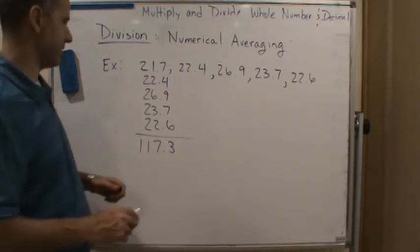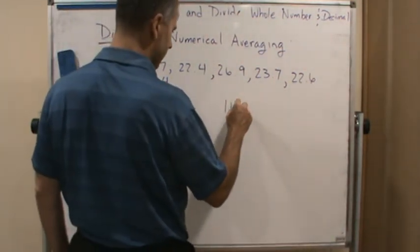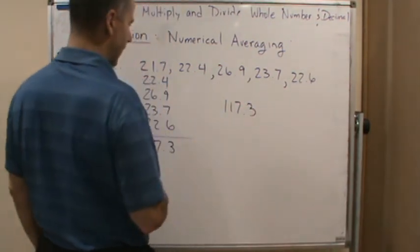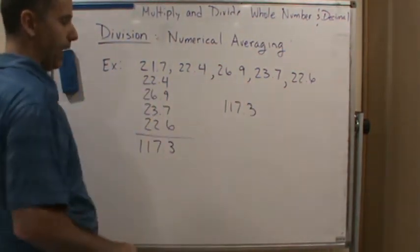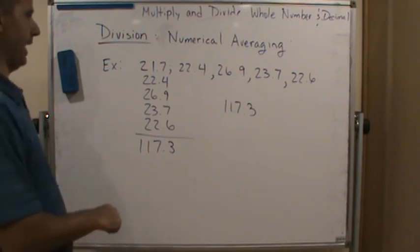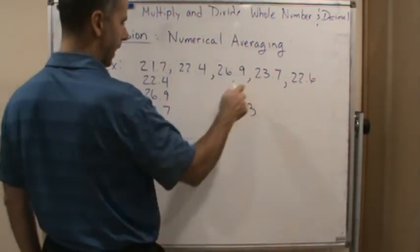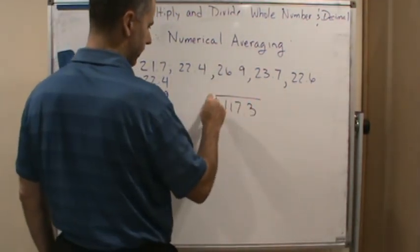So now that's the sum. Now what I'm going to do is I'm going to take the 117.3 and I'm going to divide by how many numbers do I have there? Well, I have 1, 2, 3, 4, 5. So I'm going to divide by 5.